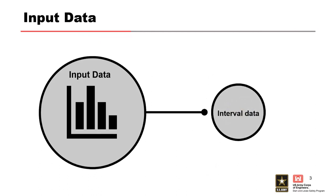Interval data is defined as an observed flood whose magnitude is not known exactly, but is reasonably known to fall within a range of values. Interval data is typically associated with unusually large flood events whose estimates are based on limited or uncertain information.